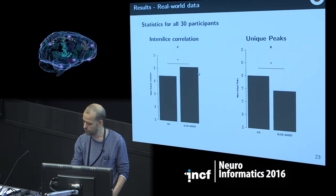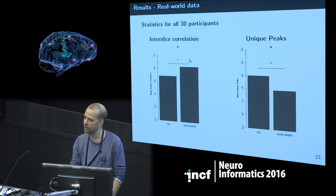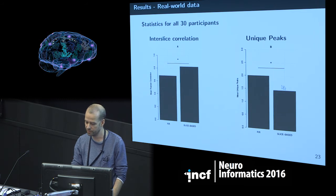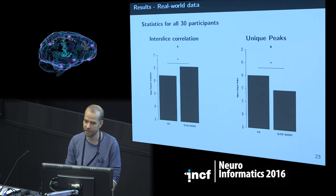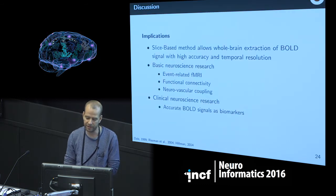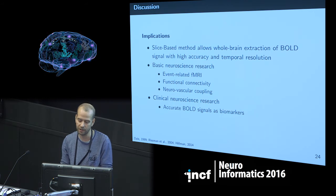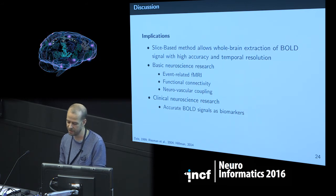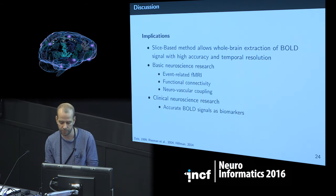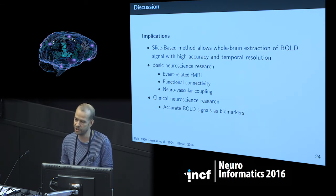Across the full group of 30 participants, there is a significant improvement in inter-slice correlation for the slice-based method compared to the standard method. The slice-based method also detects fewer peak differences across slices — you would expect all slices to show the same peak if the same signal underlies each slice. This method allows extraction of whole-brain BOLD signal with high accuracy and high temporal resolution, with applications in event-related fMRI, functional connectivity, neurovascular coupling, and clinical neuroscience as an early biomarker.